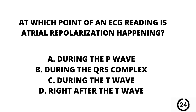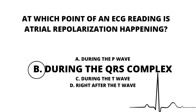Question number 24. At which point of an ECG reading is atrial repolarization happening? A. During the P wave. B. During the QRS complex. C. During the T wave. Or D. Right after the T wave. Our answer here is B. During the QRS complex.